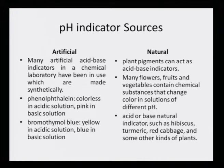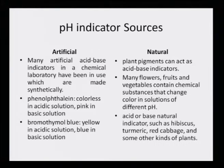There have also been natural sources from plant pigments that can act as acid-base indicators. This prompted us to take a serious look at which natural dyes have been used for acid-base indicator work. Many flowers, fruits and vegetables contain chemical substances that change color in solutions of different pH. Natural indicators such as those from hibiscus, turmeric, red cabbage, and some other plants have been explored.